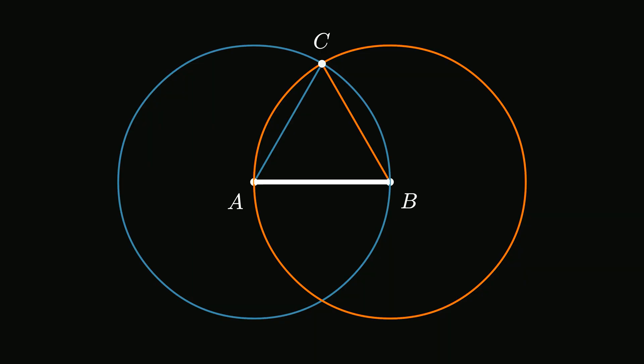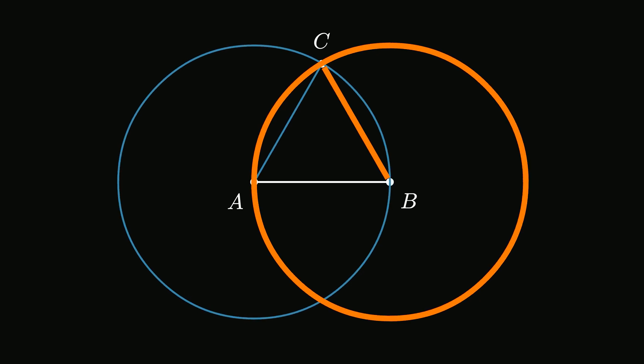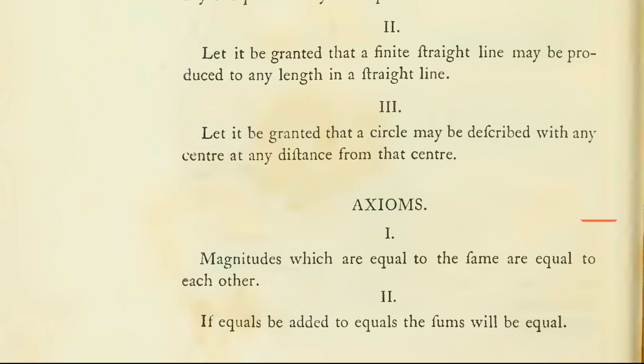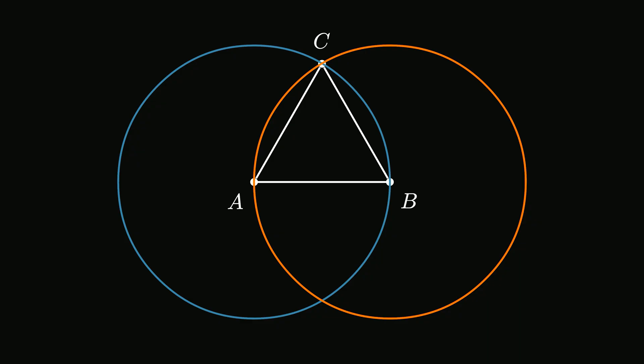Notice that AB is a radius to both circles, and both AC and BC are radii of their respective circles. Given that all radii of a circle are of equal length, it follows that the length of AC is equal to the length of AB, and likewise, the length of BC is equal to the length of AB. The length of AC and the length of BC, by axiom 1, are also equal to one another. So, all three sides are equal to each other, which makes triangle ABC an equilateral triangle.